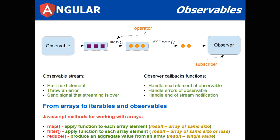From arrays to iterables and observables, you have JavaScript methods for working with arrays. Map applies a function to each array element with the result being an array of the same size. Filter applies a function to each array element with the result being an array of same size or less. Reduce produces an aggregate value from an array, a single value.